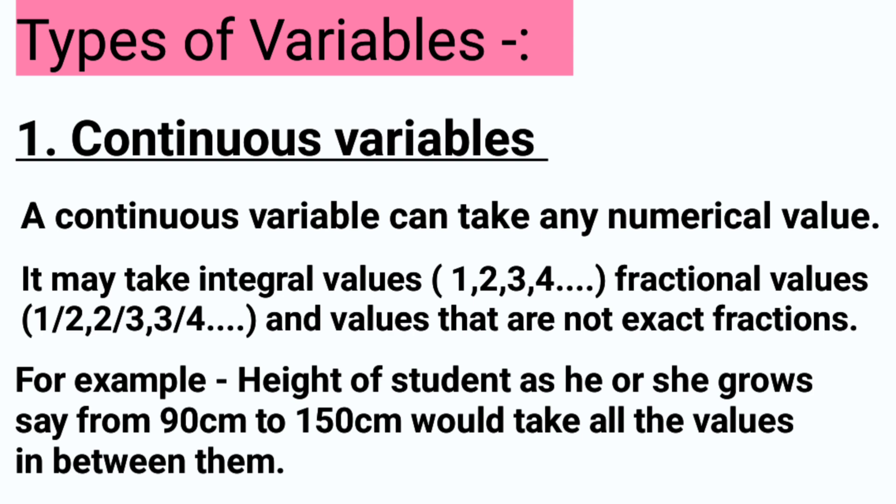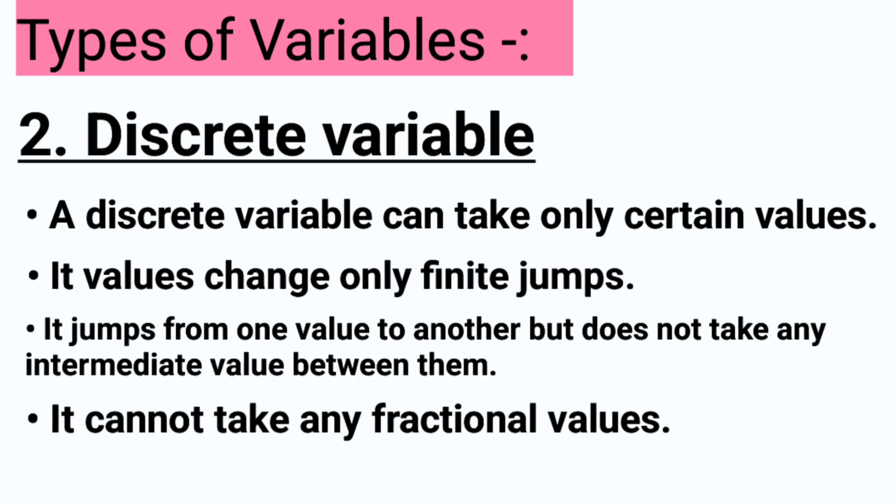For example, the height of students as he or she grows — it goes from 90 cm to 150 cm. It will take all the values in between; we will count all the values. Discrete variable is the opposite — it takes only certain values, whereas continuous takes uncertain values.